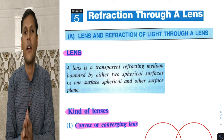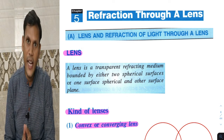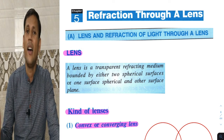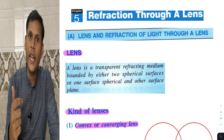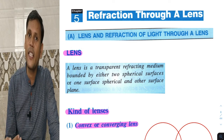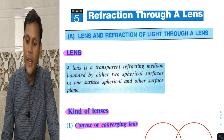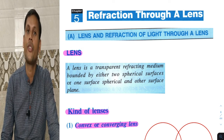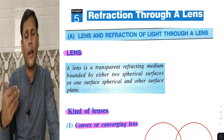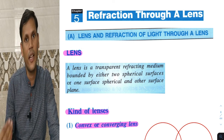In this topic, we basically have to study about lenses. What is a lens? Lens is part of optics in physics. Optics is the branch of physics in which we study about the phenomenon of light.